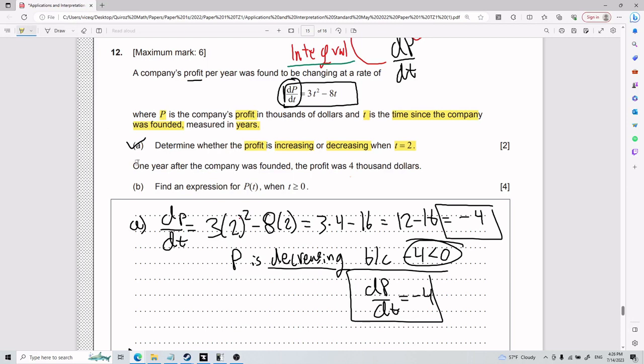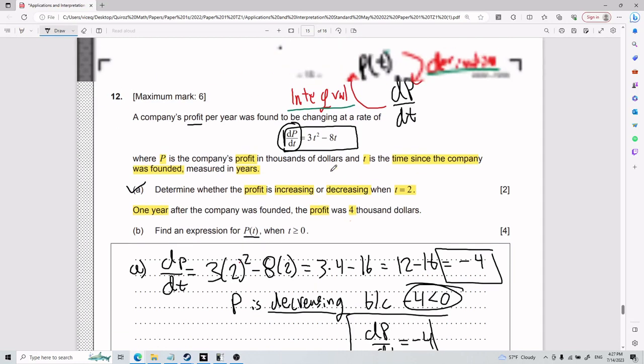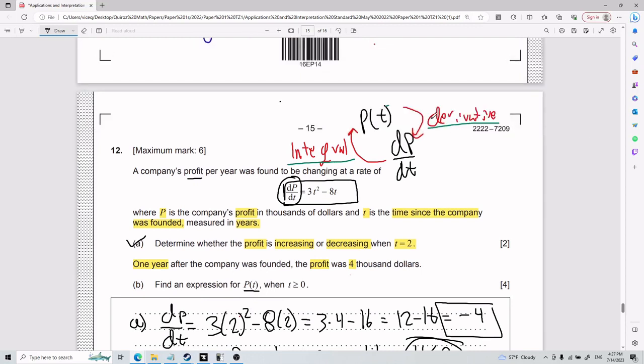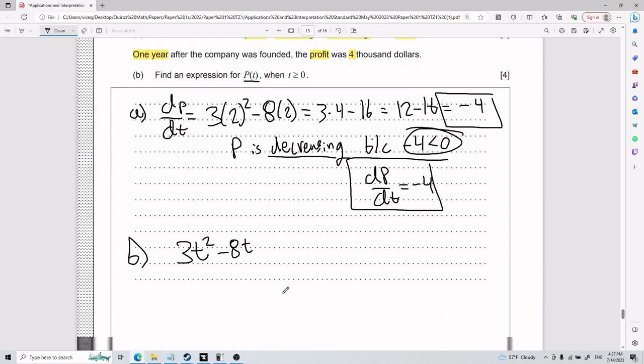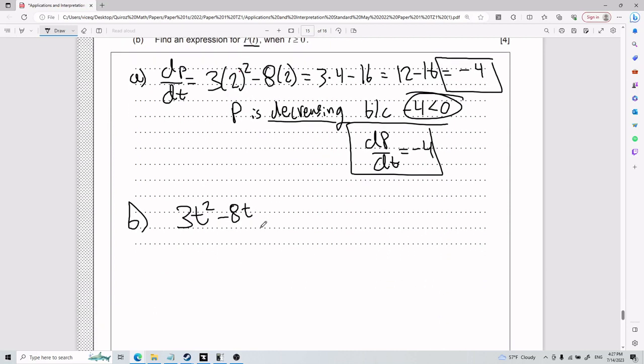Now for part B, they tell us that one year after the company was founded, the profit was four thousand dollars. We need to find an expression for P(t) when t is greater than or equal to 0. So as I mentioned earlier, we need to do the opposite of a derivative.